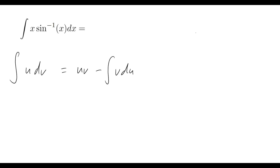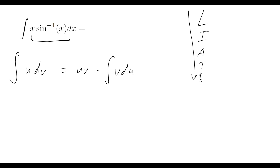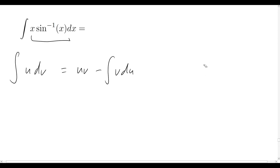So which one is going to be u and which one is dv? We go back to our LIATE principles — that stands for Logarithm, Inverse, Algebraic, Trigonometric, and Exponential. The first one we see going down that list which occurs in our original problem is what we set u equal to. We see there are no logarithms, and then we do have an inverse function, so u is going to be equal to sine inverse of x.